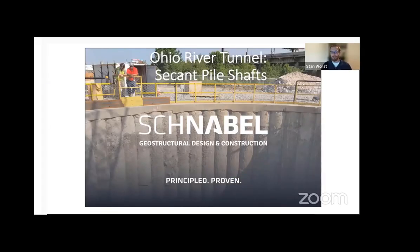This talk is going to delve into the tunnel shafts that we installed for the Ohio River Tunnel in Louisville, Kentucky. These were performed a few years ago. Schnabel's part of the project was fairly simple and straightforward. We were installing three circular secant pile shafts, meant to be access for the tunnel boring machine to get lower down into the hole, for the muck from the tunnel to get extracted out, and for the TBM to be extracted at the end of the tunnel.